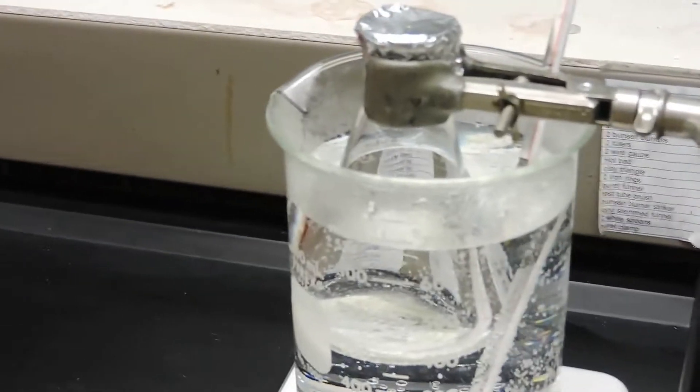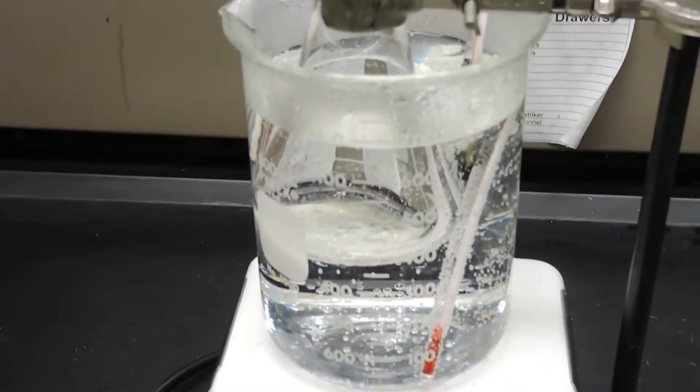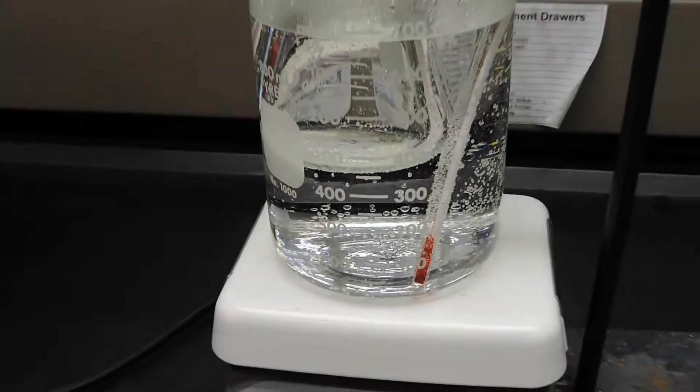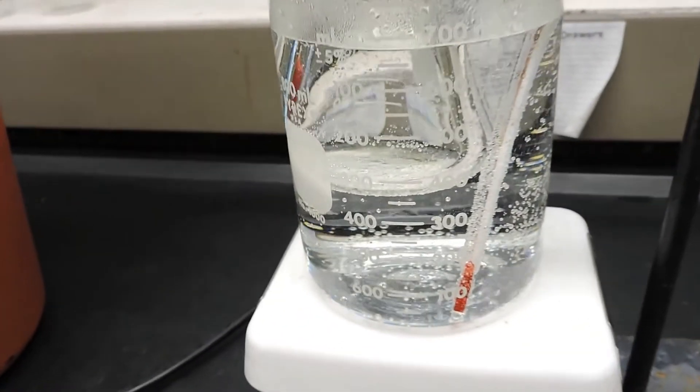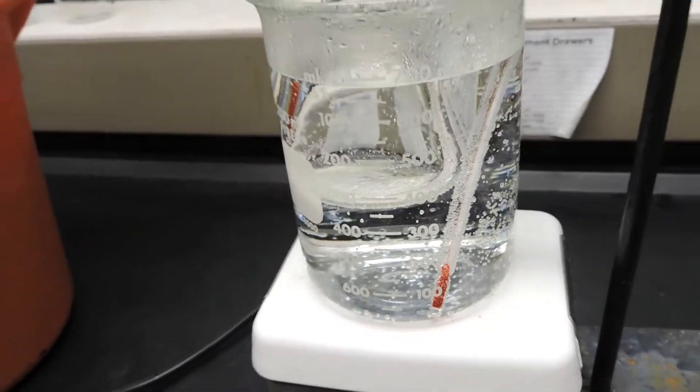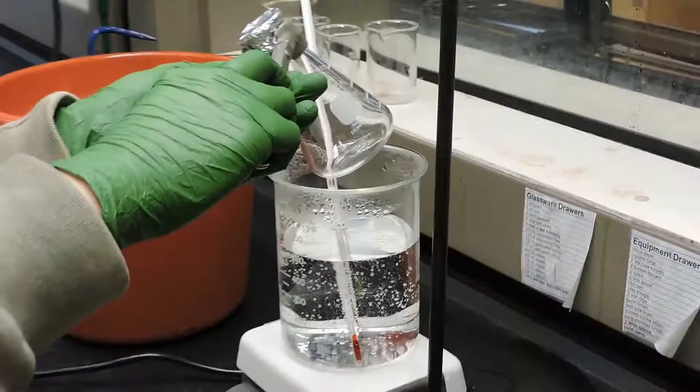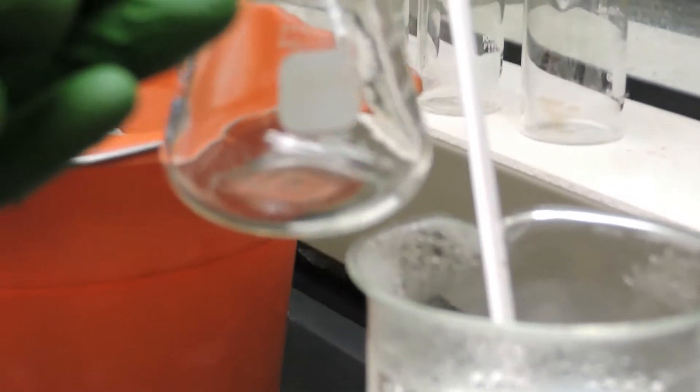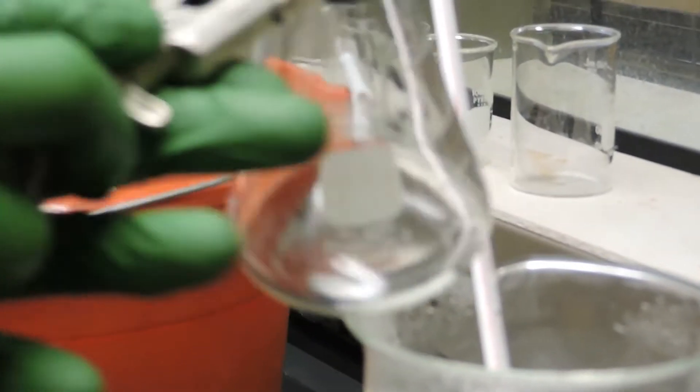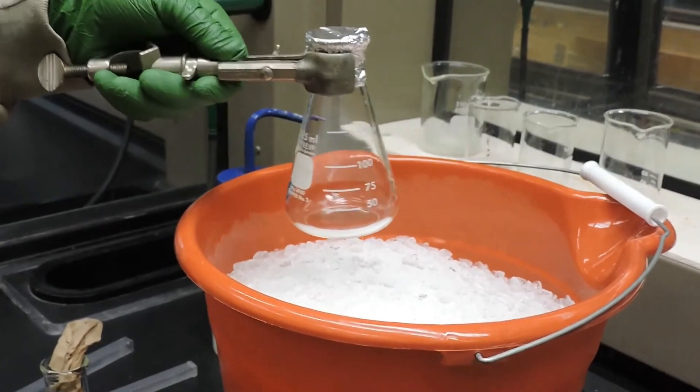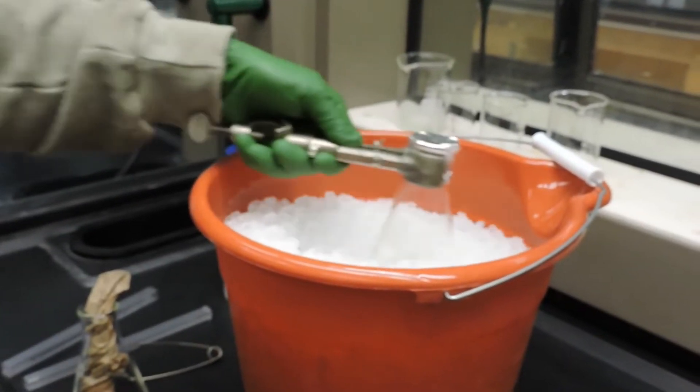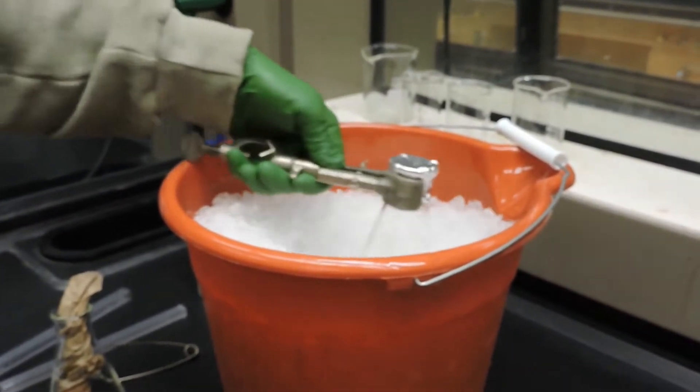We will continue heating at the boiling point of water until the liquid has vaporized. Upon analysis, you can see that the unknown liquid we put in the flask has evaporated, and now we're going to take this and place it on the ice bath to cool it down and recondense the vapor in the flask.